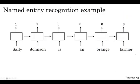Continuing with the named entity recognition example, if you're trying to detect people's names, give it a sentence like Sally Johnson is an orange farmer. Hopefully, you'll figure out that Sally Johnson is a person's name, hence the outputs one like that.